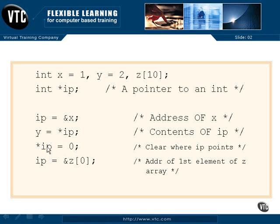This asterisk says go to ip, get the address that is stored in there, the memory location, go to that memory location, and put a 0 in there. Same as if we had said x equals 0. You see the difference?